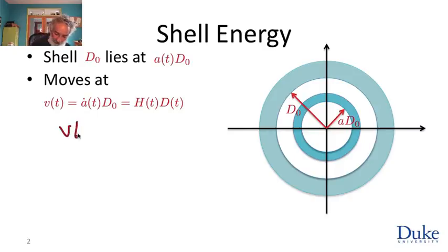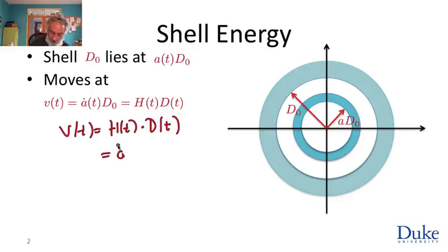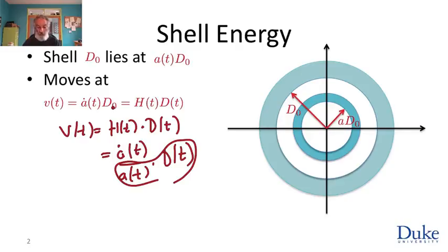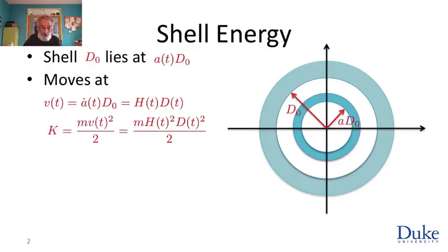The speed at which the shell is moving, we computed a couple of clips ago. We said that v at any time t is H(t) times d(t). We can also write H(t) as ȧ — the rate of change of a at time t — divided by a(t), times d(t). We can collect this into d₀. So here are two ways to write the velocity with which the dust in the shell is receding from us at any time t. Since recessional motion is the only motion of the shell and we're working in Newtonian physics, we can compute the kinetic energy.